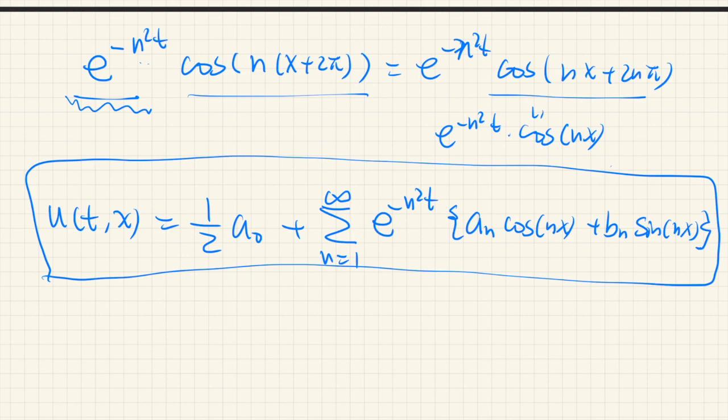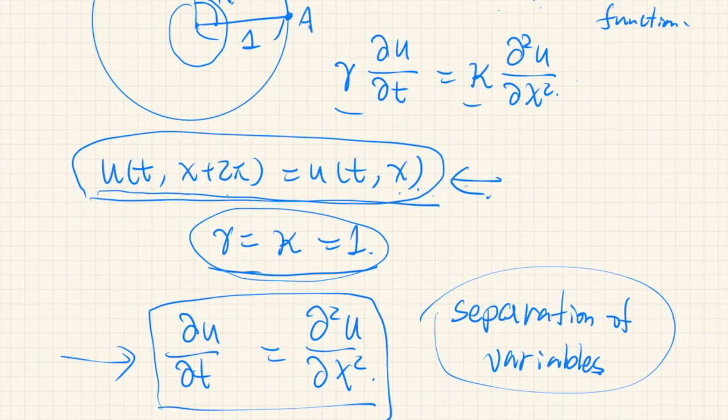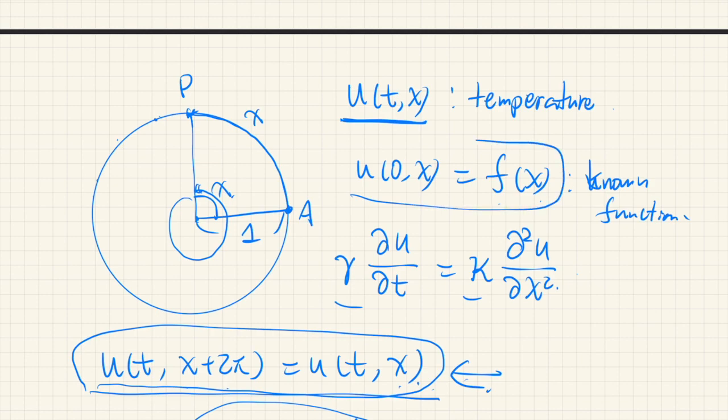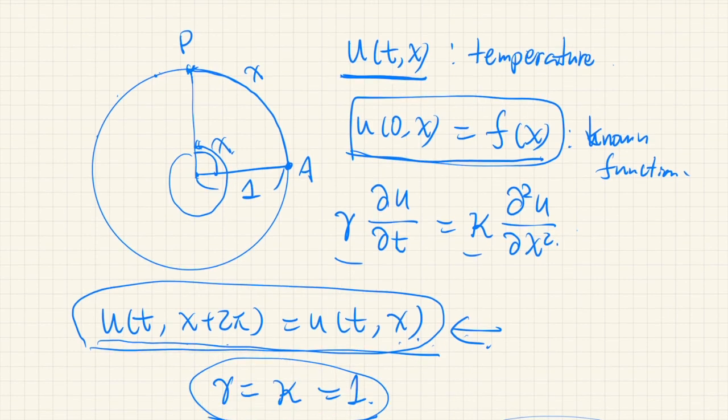The next question is, we have initial condition, right? That is given by this one. So we have to choose the coefficient of that linear combination so that this initial condition is satisfied.